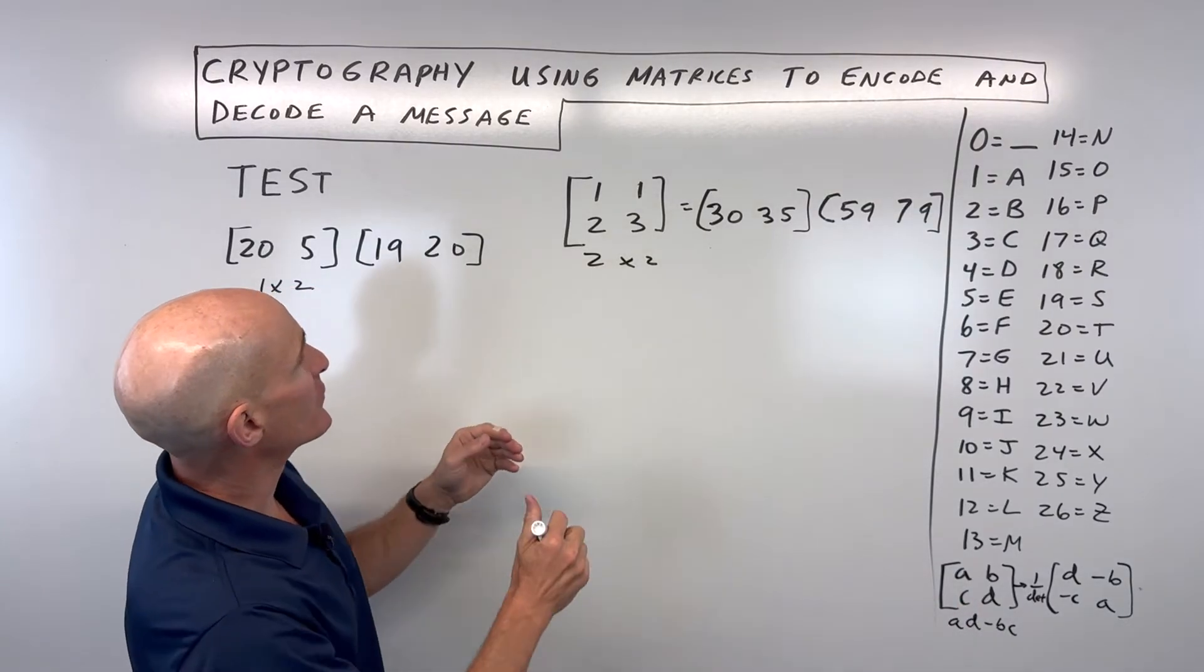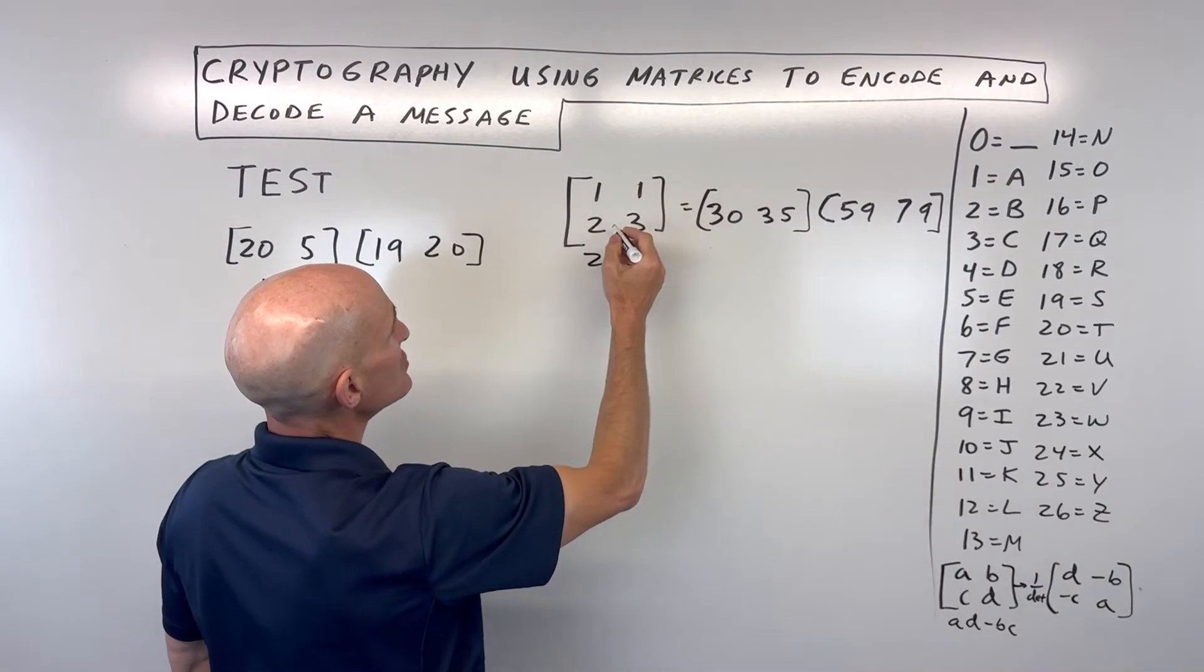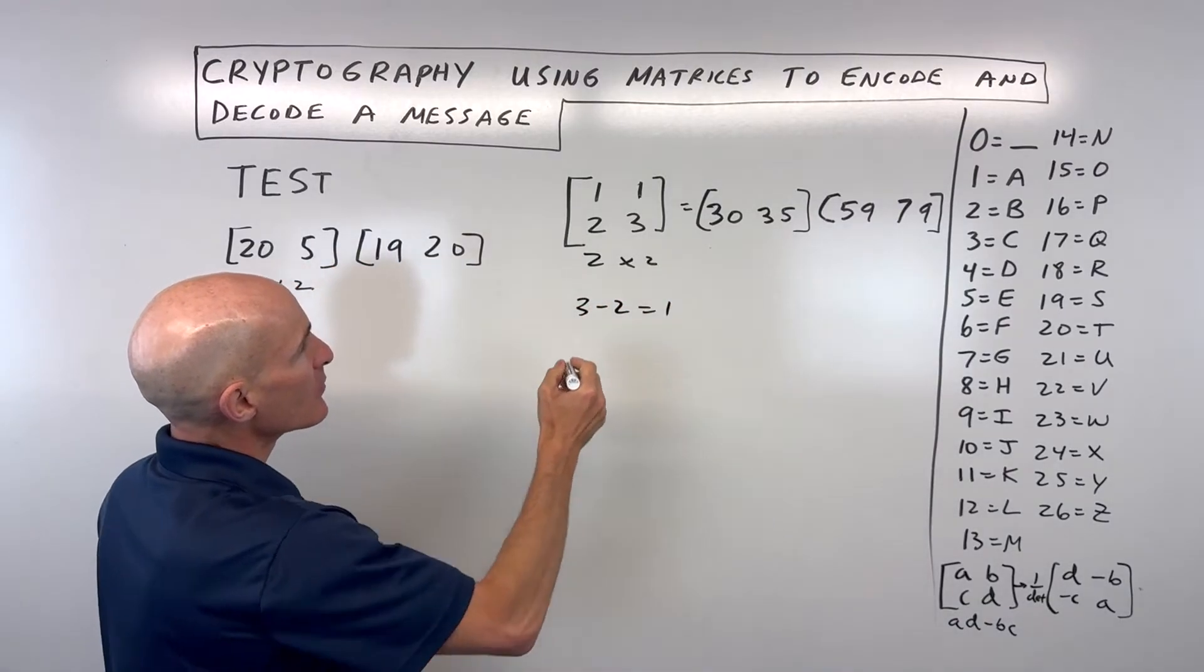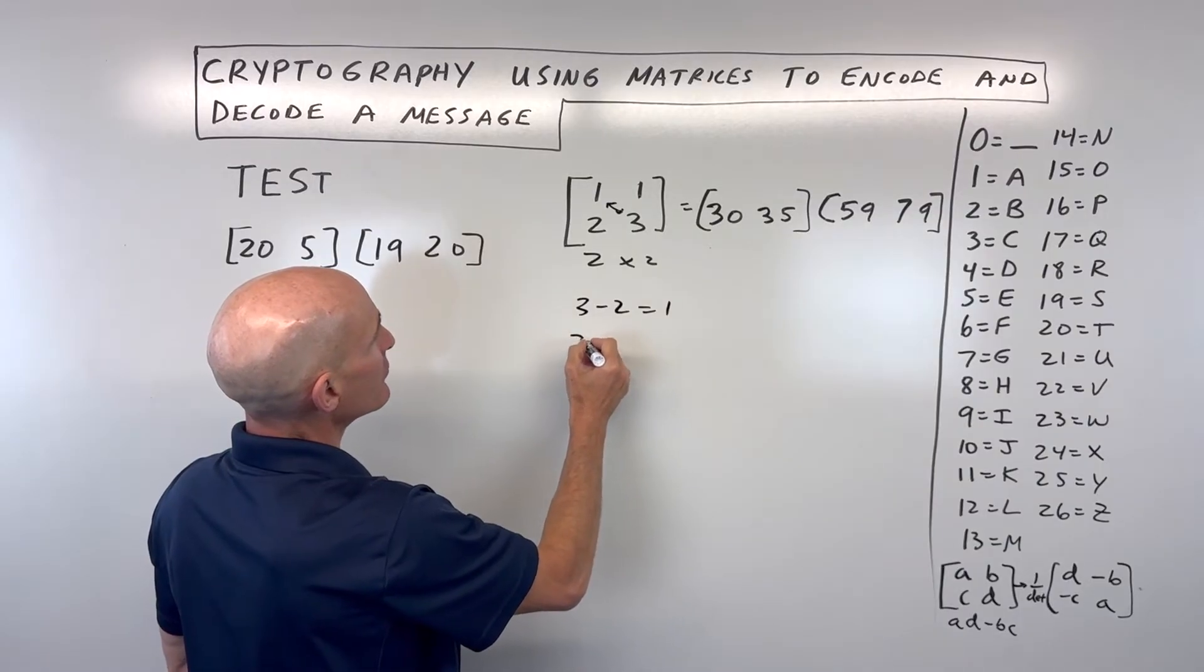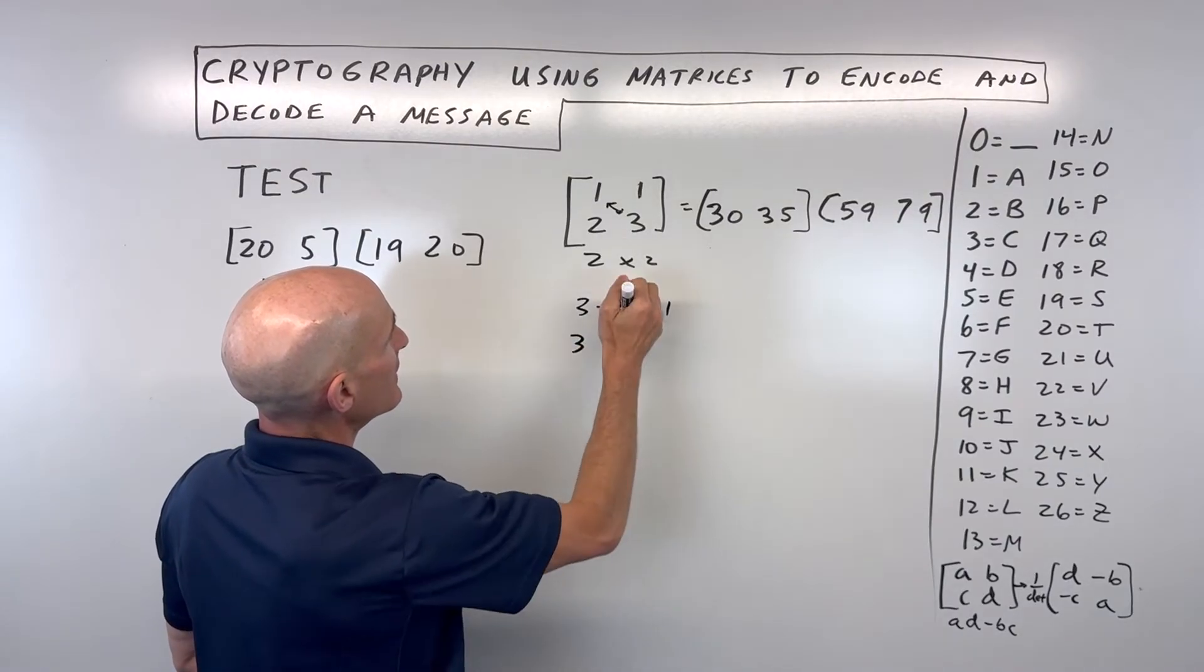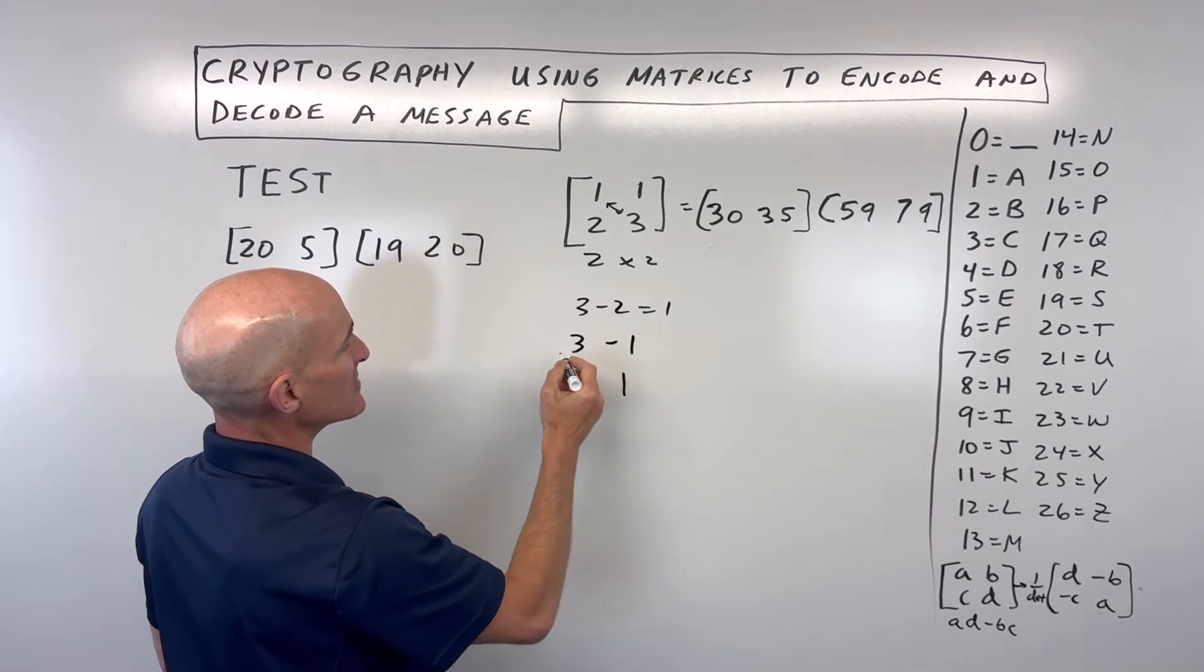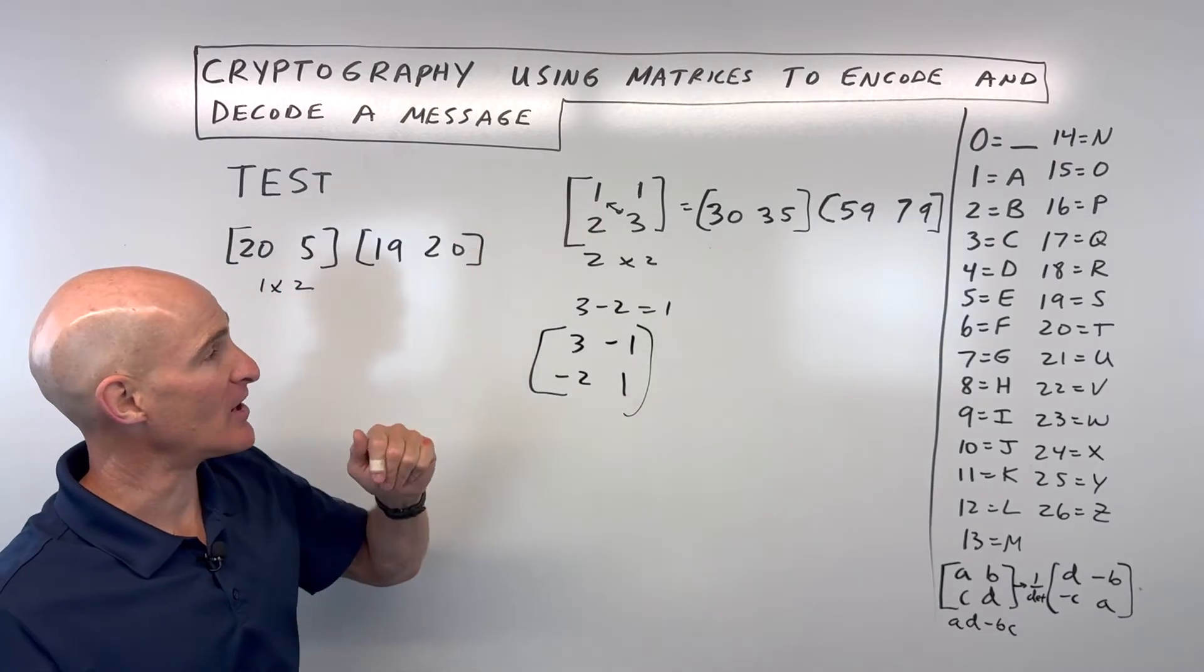Now remember, the determinant is AD minus BC. So let's go ahead and do that. For this matrix, the determinant is 3 minus 2, which equals 1. Then we're going to interchange these on the diagonal, so that's going to give us 3 and 1. And the B and the C stay in the same position, but the signs are just going to be the opposite. So this is now our decoding matrix.